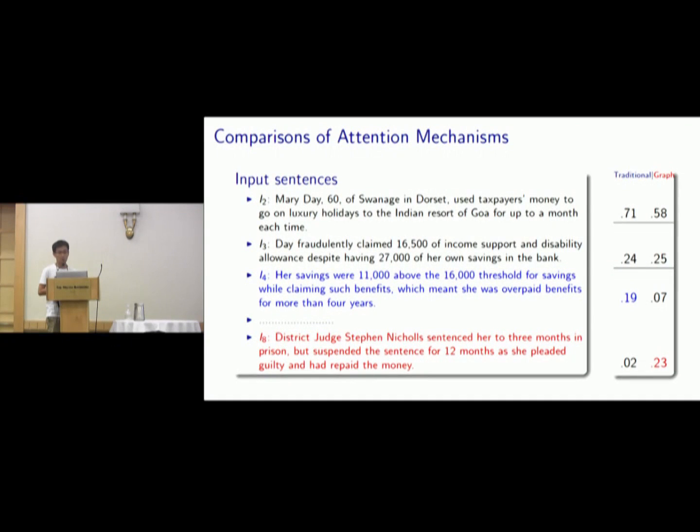A concrete example to compare the traditional attention mechanism and the graph-based attention mechanism. When generating the first and the second output, both the attention mechanisms will attend to the same sentences. But the difference comes when generating the third output. Traditional attention will attend to the consequent sentence, where our graph-based attention ignores it and attends to the far away sentence, which seems more important to a summary. Generally, traditional attention function tends to attend to the first sentences of a document and our graph-based attention tends to attend to important sentences.